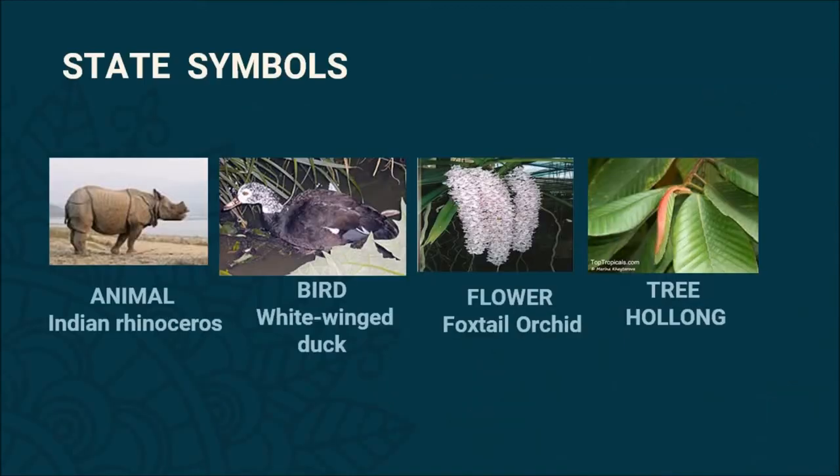Let's have a look at the state symbols. The one-horned rhinoceros is the state animal and the white-winged duck is the state bird. The foxtail orchid is the state flower and hollong is the state tree. Notably, the foxtail orchid and hollong are also the state flower and state tree of Arunachal Pradesh.